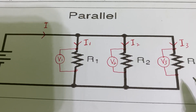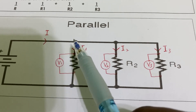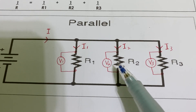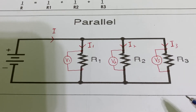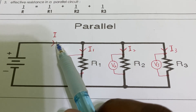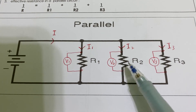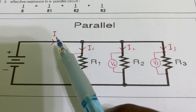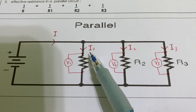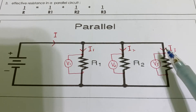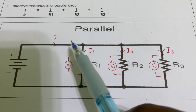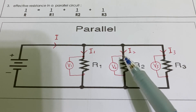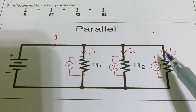When you look at the electric current, the main current is divided to each branch according to the need of the branch. For example, if this is 6 ampere and all the resistances are equal, then each branch will have 2 ampere, 2 ampere, and 2 ampere.